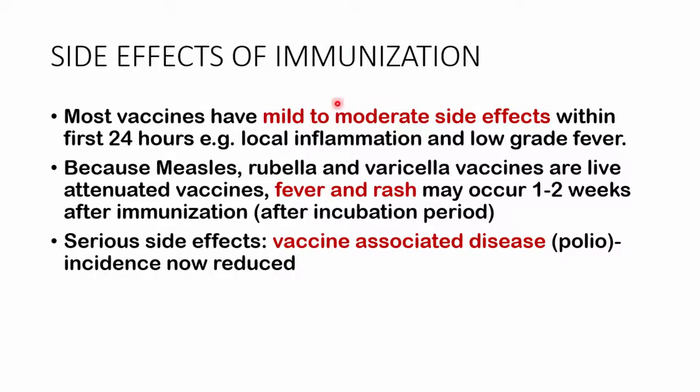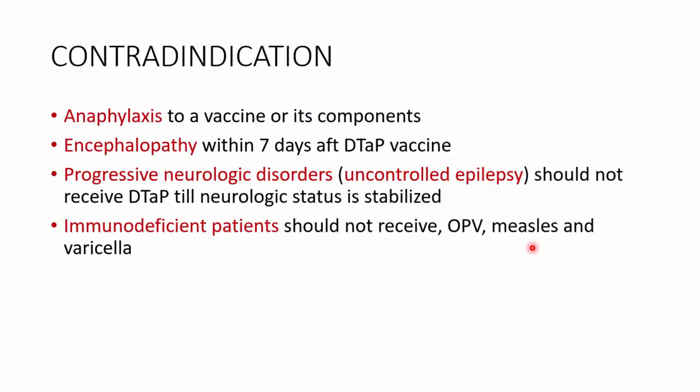Some side effects of immunization: most vaccines have mild to moderate side effects, usually within the first 24 hours — some local inflammation and low-grade fever. Because measles, rubella, and varicella vaccines are live attenuated, they may cause fever or rash about one to two weeks after immunization, corresponding to the incubation period of those viruses. Serious side effects such as vaccine-associated polio disease are now reduced because we use both OPV and IPV.